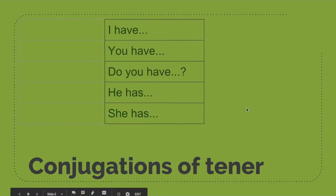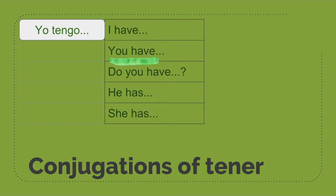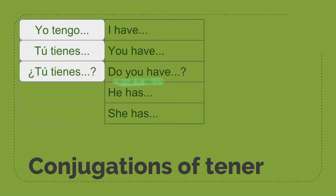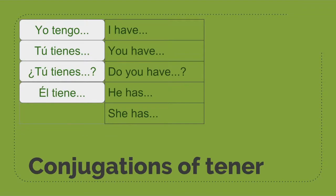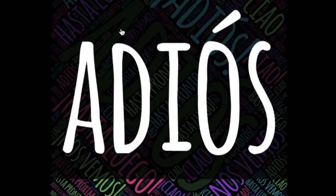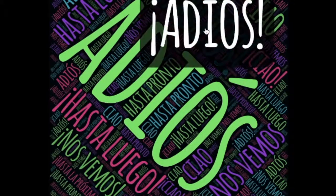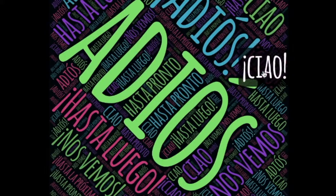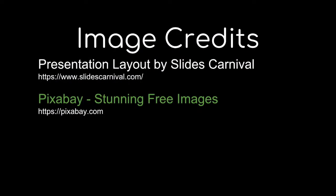Let's go over these conjugations one more time just to be sure that we have them. I have: yo tengo. You have: tú tienes. Do you have: tú tienes? He has: él tiene. Last but not least, she has: ella tiene. Those are the five forms of tener that we are going to look at today. I hope this video gives you a little information about how to conjugate this verb and how to use these vocabulary words to describe yourself as well as other people.